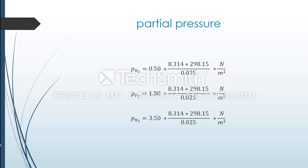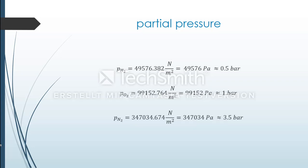If we calculate the three partial pressures, we receive the following results. The partial pressure of hydrogen is 0.5 bar, the partial pressure of oxygen is 1 bar, and the partial pressure of nitrogen is 3.5 bar.